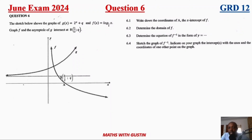Question six: we have a sketch showing the graph of g(x) given by 2 to the power of x plus q, and f(x) given by log base one-half of x. The graph of f and the graph of g, and the asymptotes of g, intersect at point B.